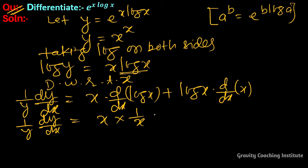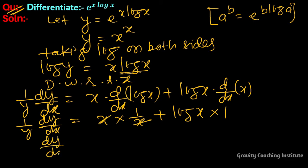So 1 upon y dy upon dx equals x into 1 upon x, plus log x into 1. Here x and x cancel, so dy upon dx equals y into bracket of 1 plus log x.